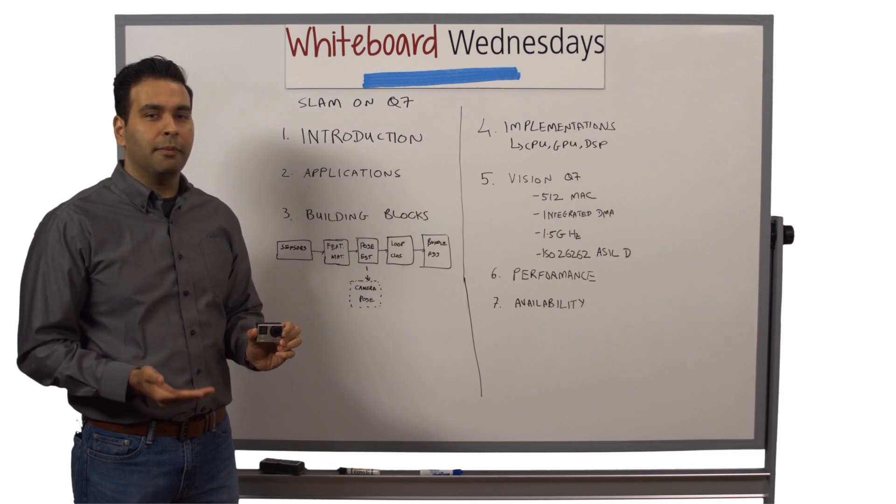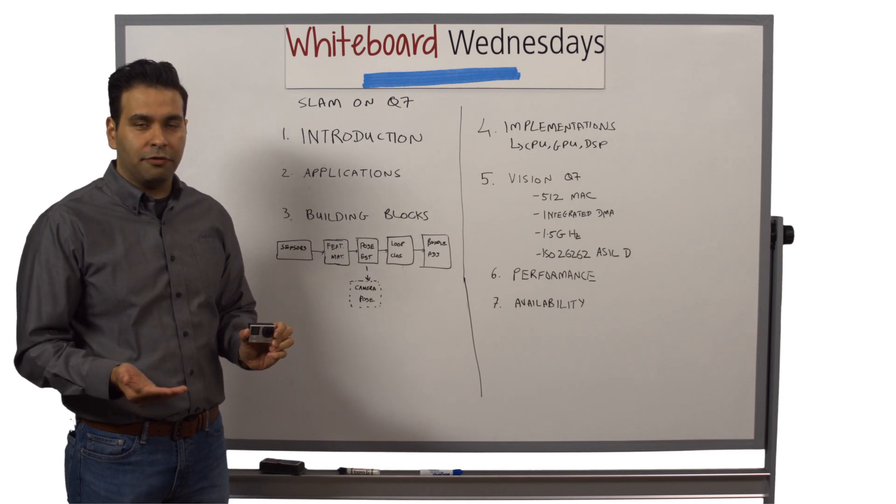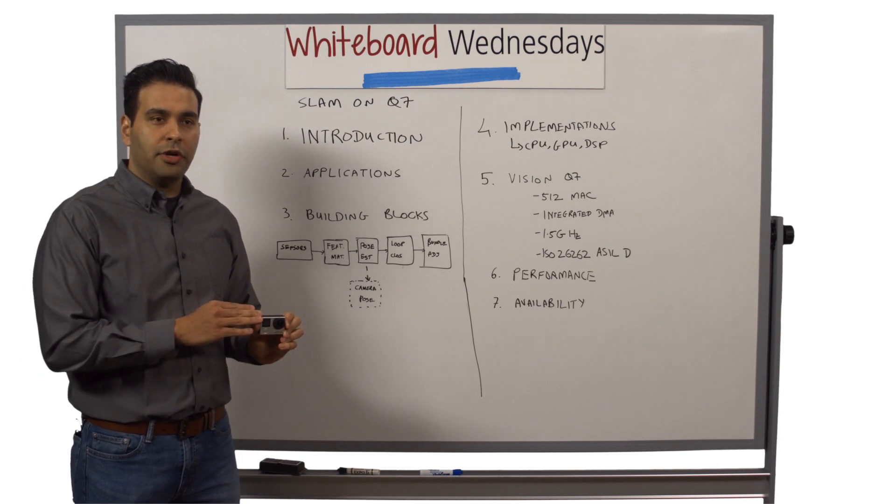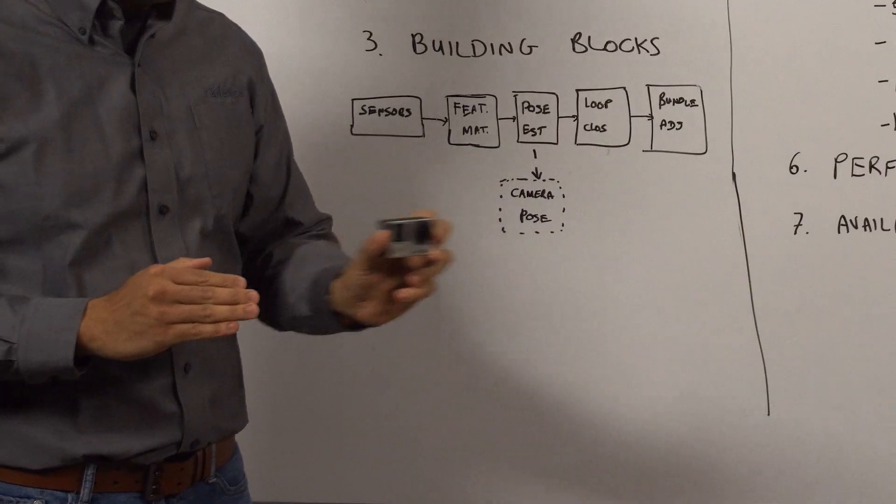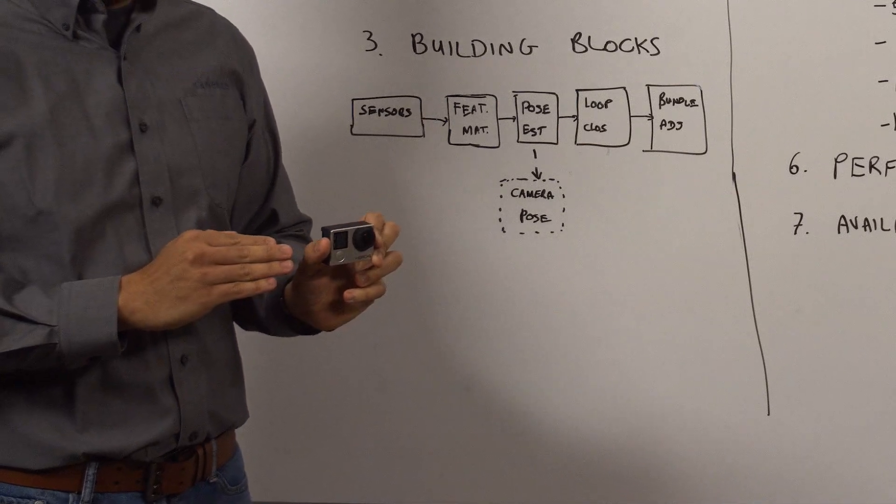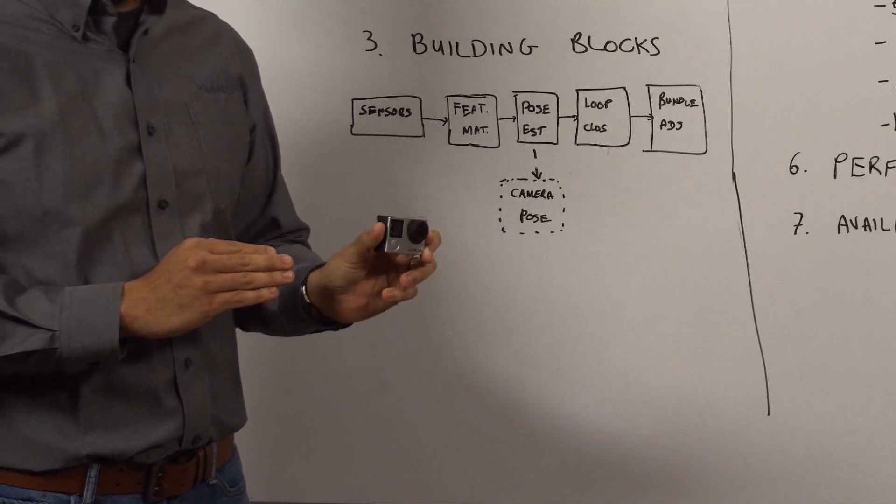A common term that you will hear that is used along with SLAM is six DOF for six degrees of freedom. All that means is that they are tracking three degrees of freedom on your position: your X, Y, Z, and three degrees of freedom on your orientation: your yaw, pitch, and roll.